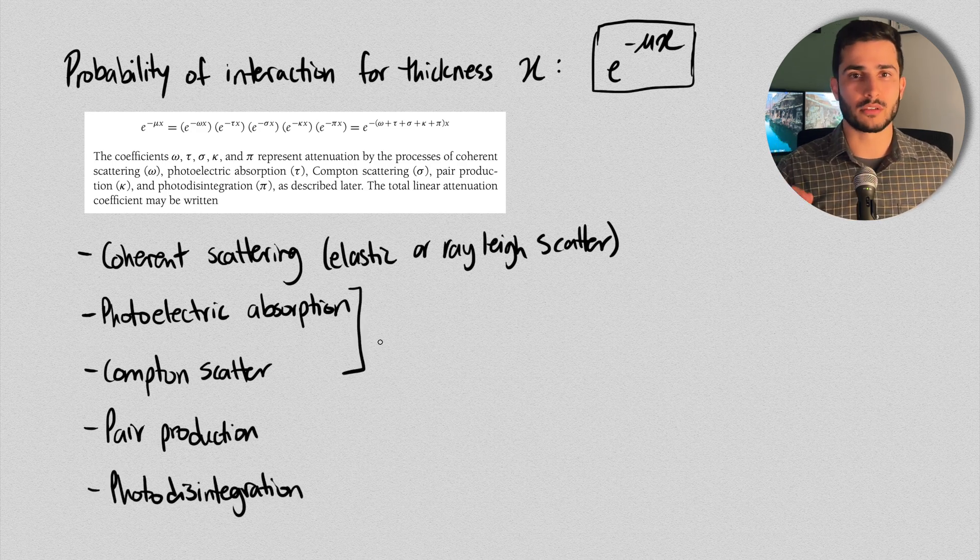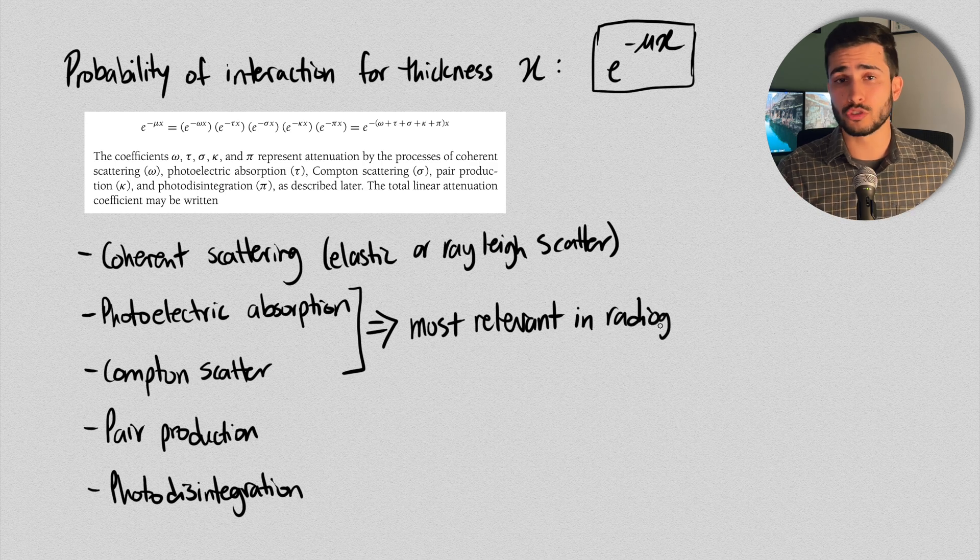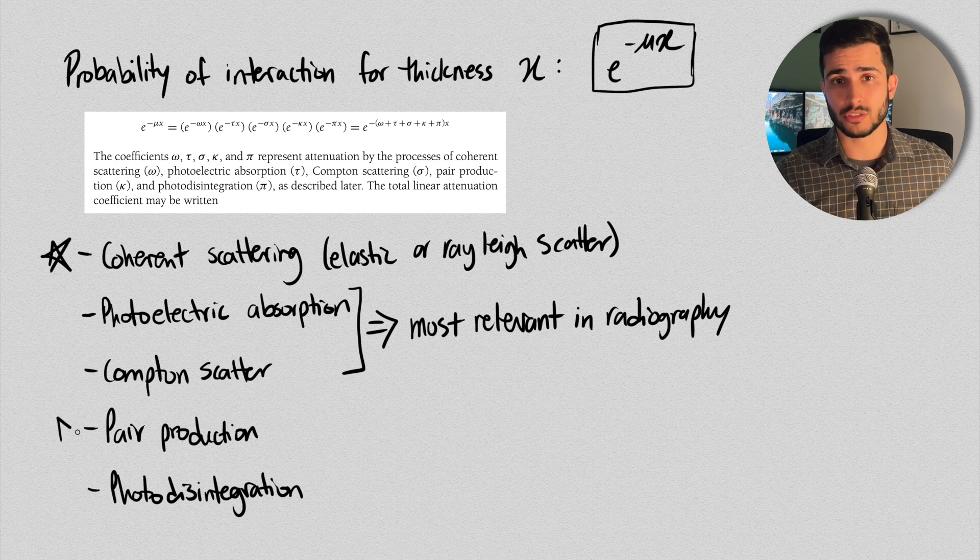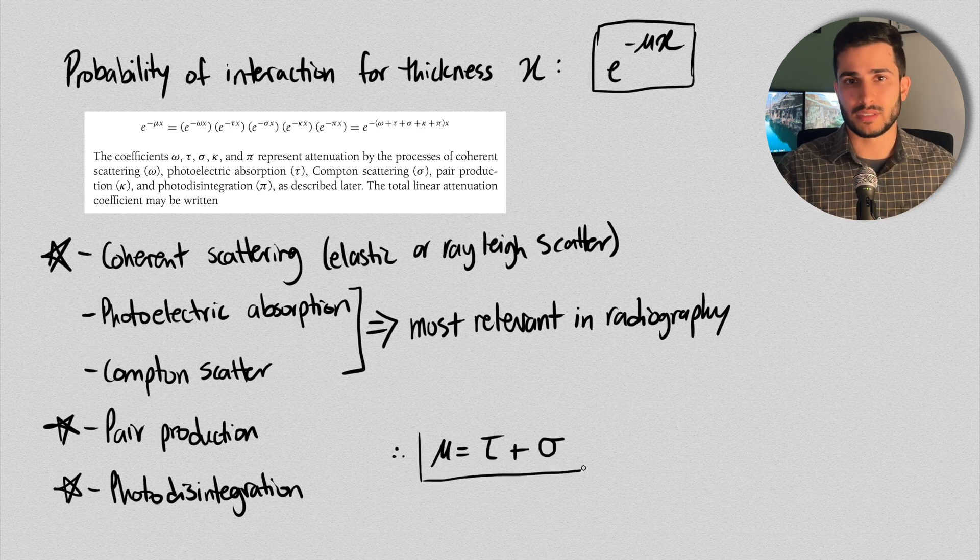Now, the two most relevant for medical imaging are photoelectric absorption and Compton scatter, which I've actually made separate videos for, where I go into more depth about what they are and how they contribute to the final image. And so coherent scatter, pair production, and photodisintegration are all negligible factors, they're not even taken into account. And so μ is just written as τ plus σ.